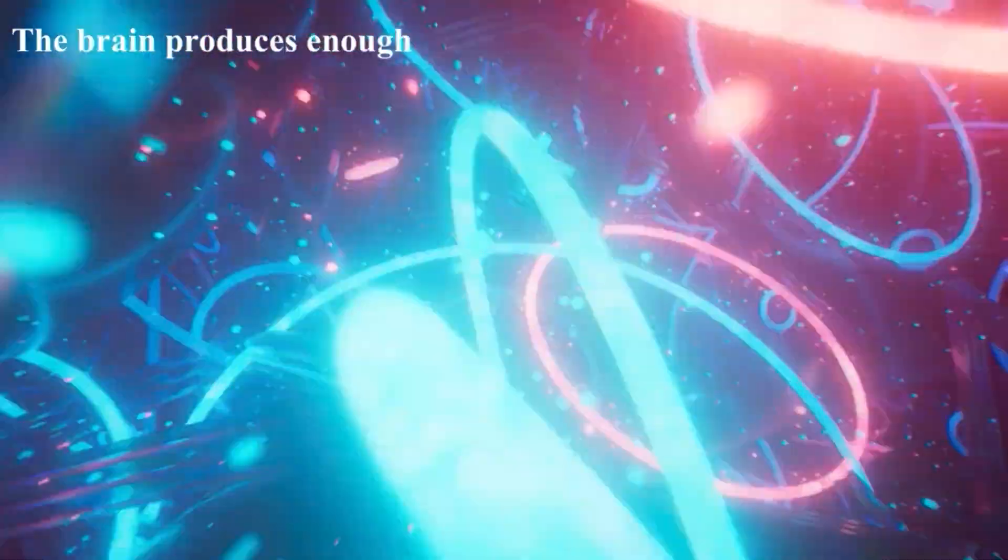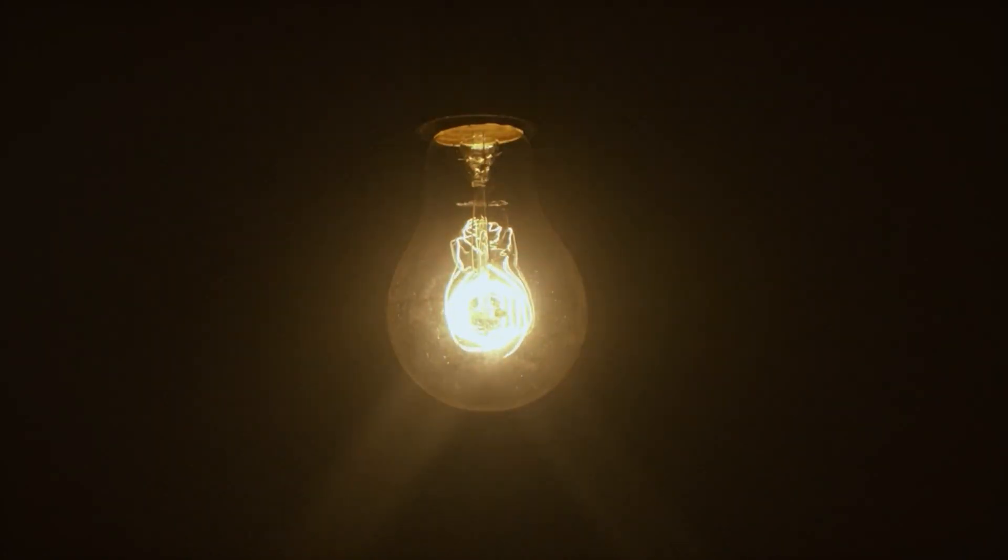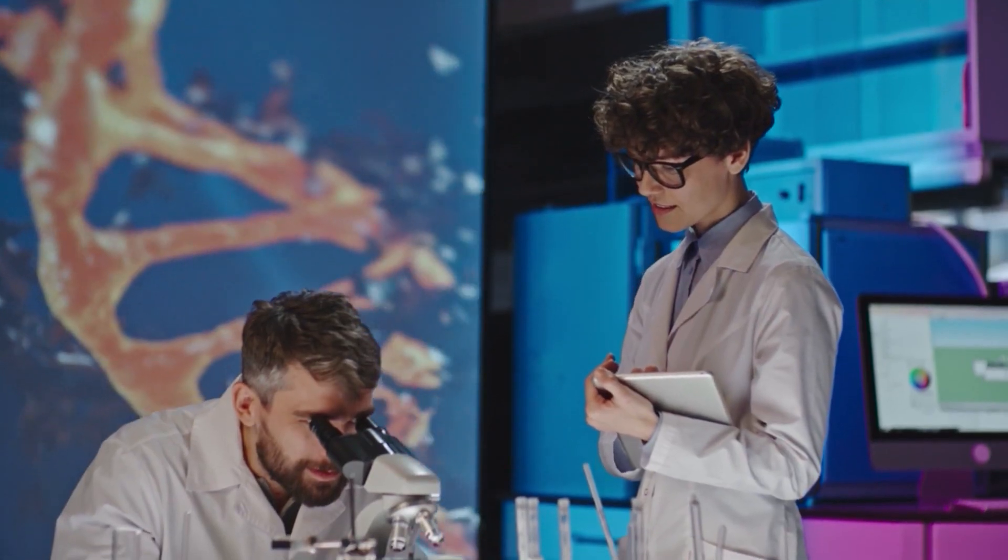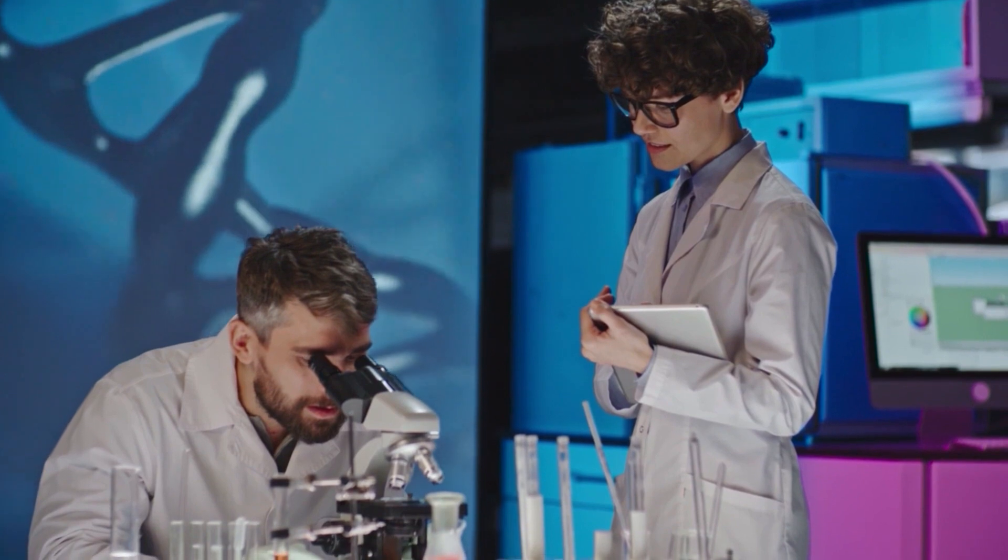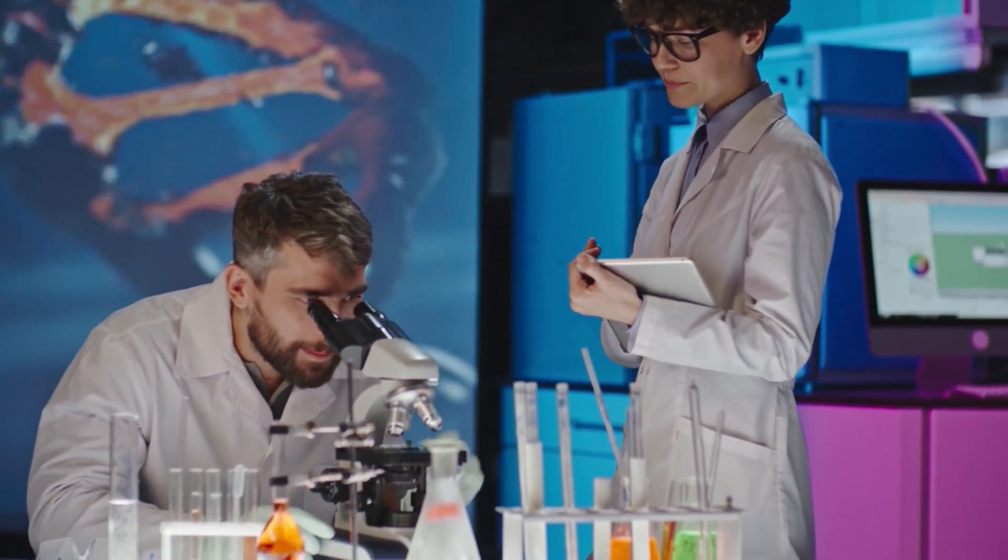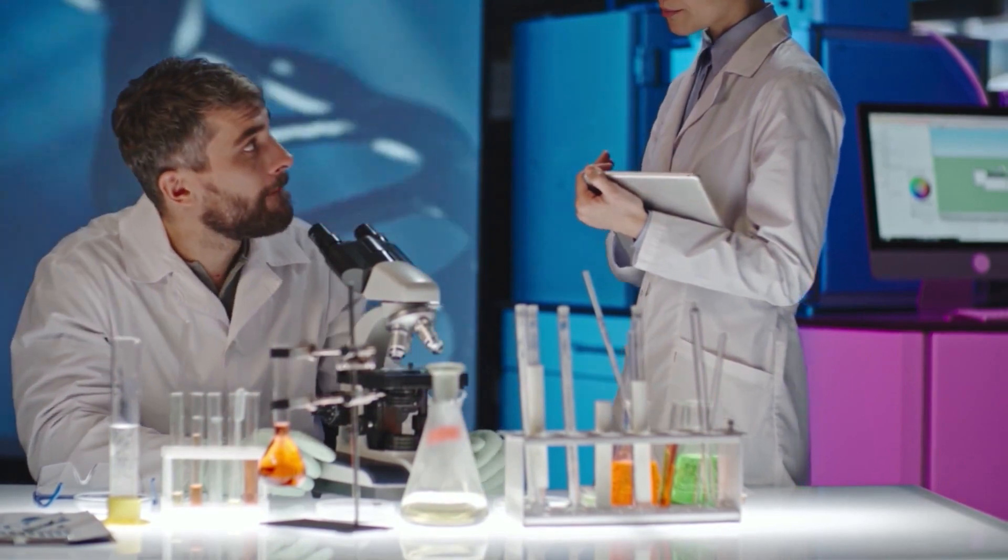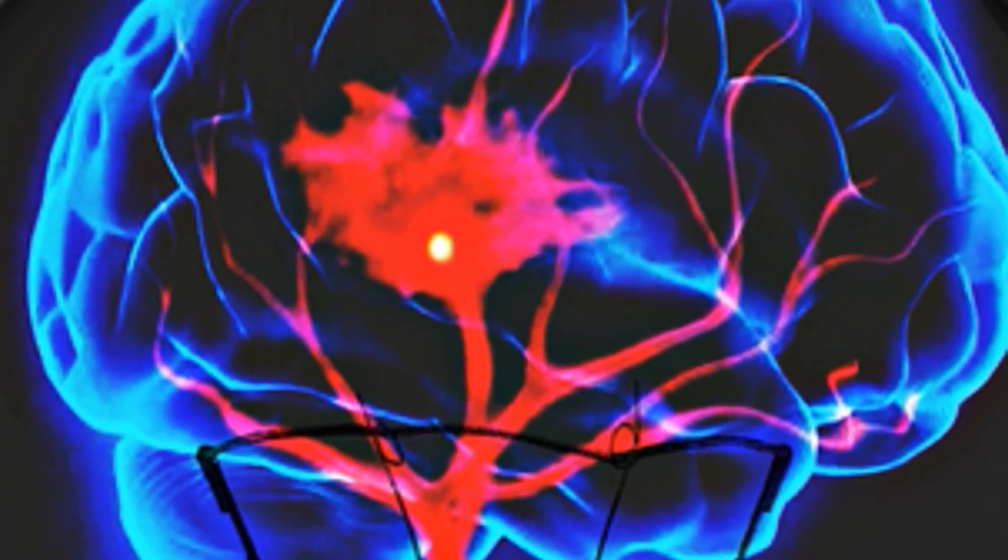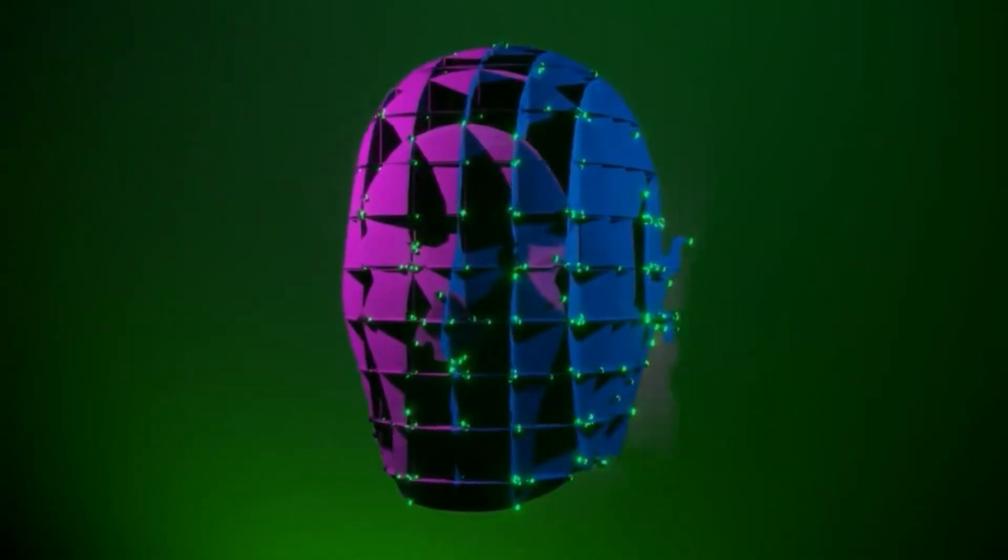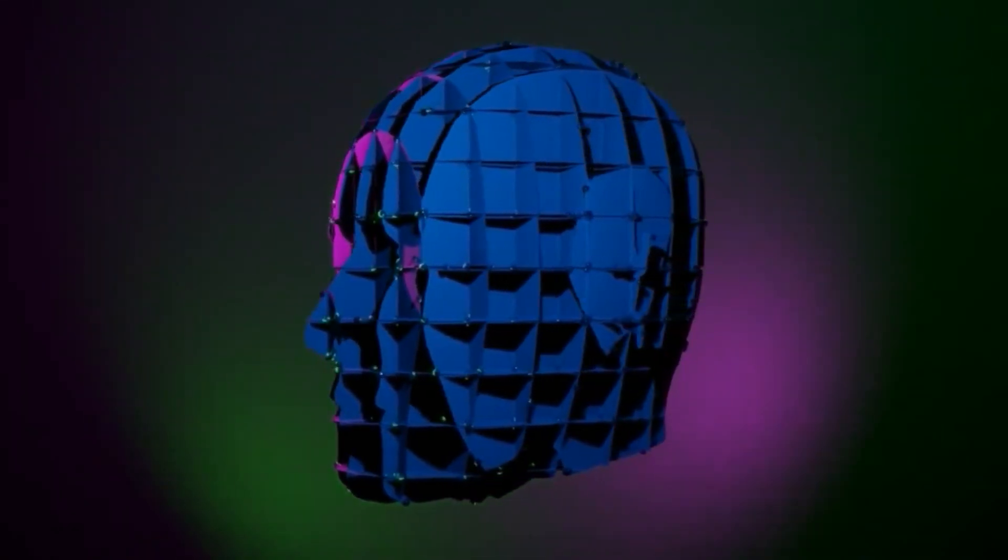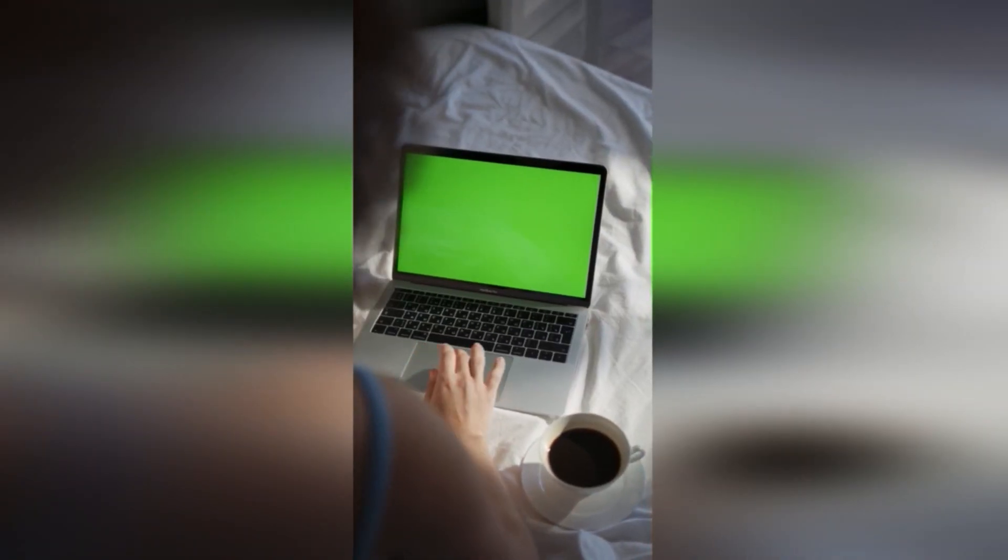5. The brain produces enough electricity to light up a small light bulb. According to scientists from Stanford University, a robot with a processor comparable in intelligence to a human brain will need at least 10 megawatts of electricity to fully function. And our neurons generate enough energy during the day to light a light bulb. In addition, the brain works much faster than the smartest computers.